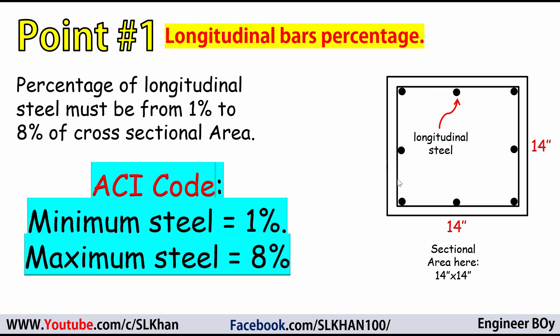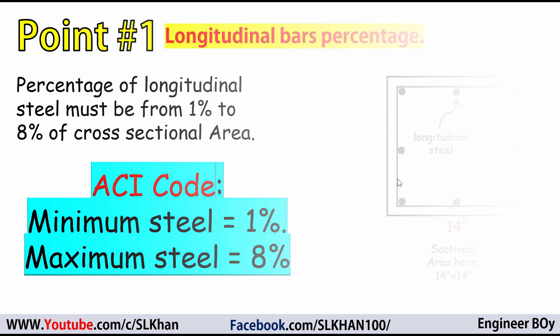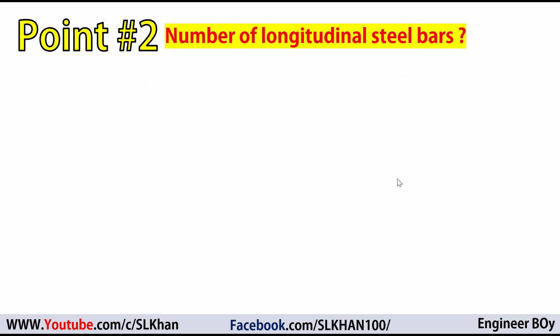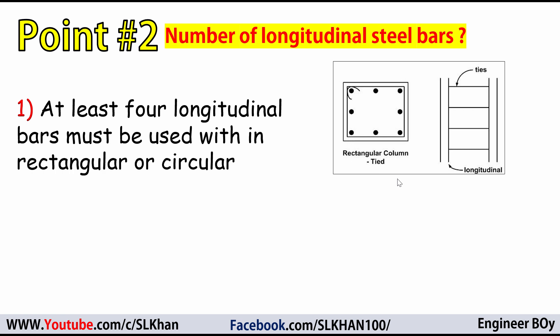So the limit is from 1 to 8%. Point number 2 is about the number of longitudinal or main steel bars. At least 4 longitudinal bars must be used within rectangular or circular ties. This is the minimum — you can use more, which depends upon the design and the loading conditions.